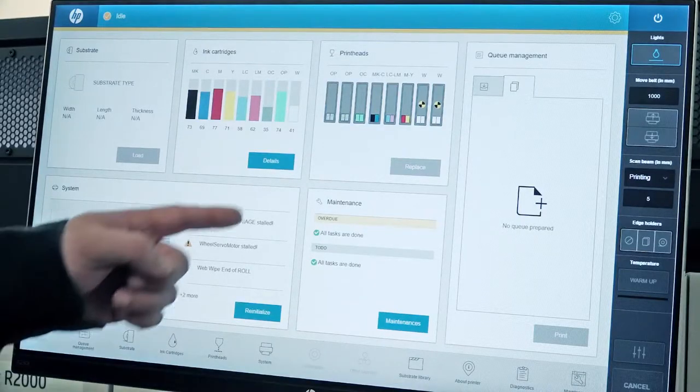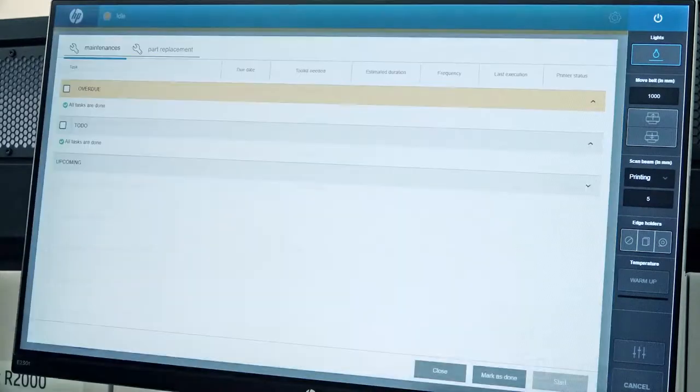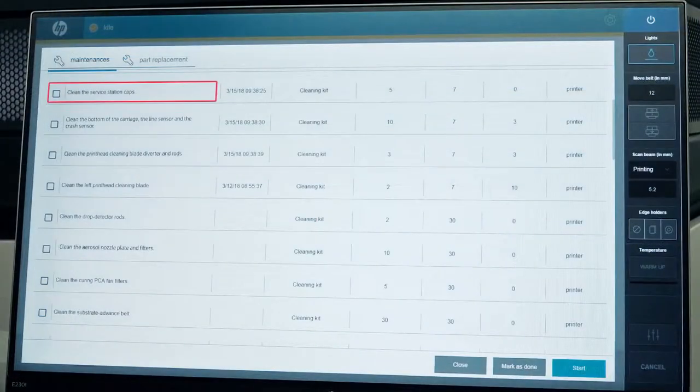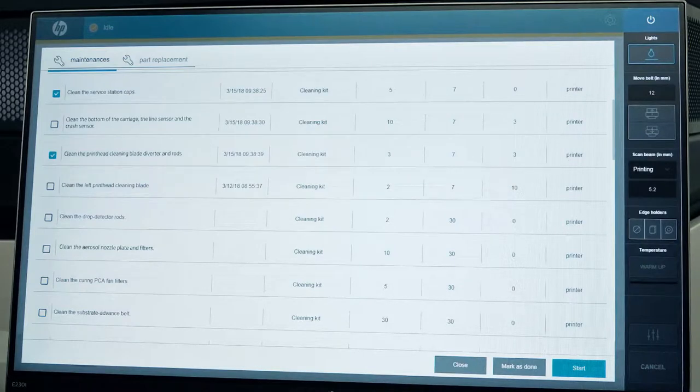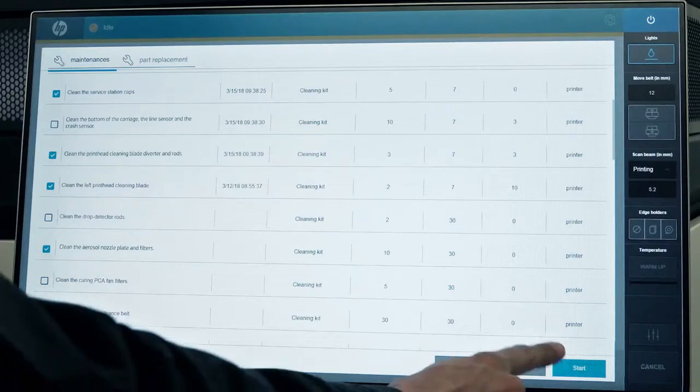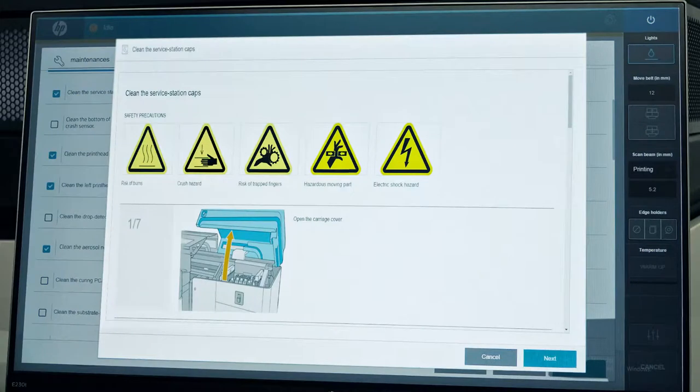From the IPS or internal print server, touch maintenance. Select clean the service station caps, clean the print head cleaning blade diverter and rods, clean the left print head cleaning blade, and clean the aerosol nozzle plate and filters. Touch start to view instructions on the maintenance process.